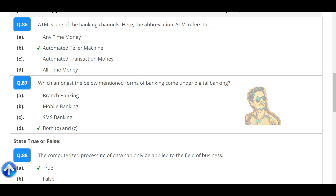ATM is one of the banking channels. The abbreviation ATM refers to Automated Teller Machine. Which among the below-mentioned forms of banking come under digital banking? Both B and C.